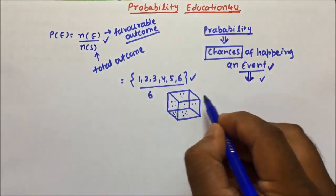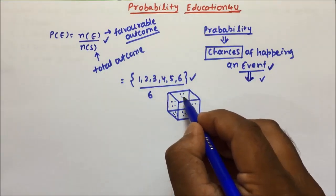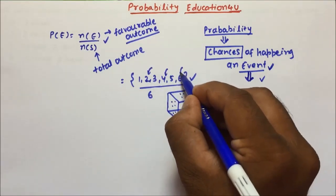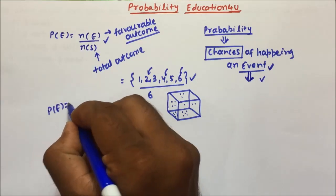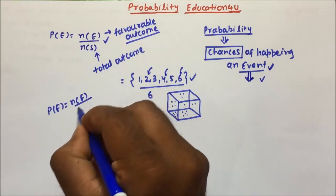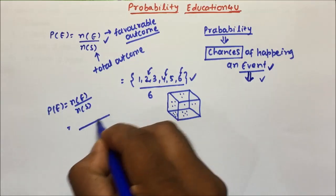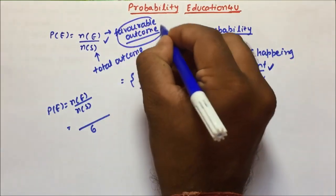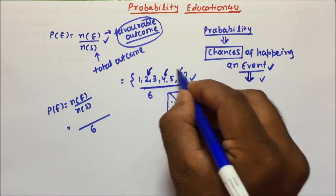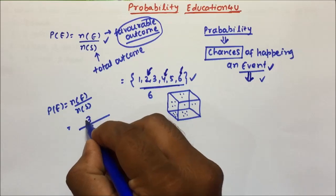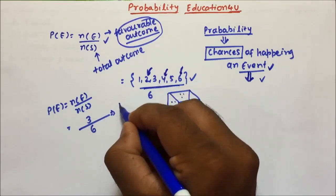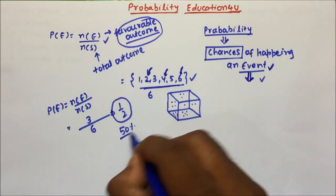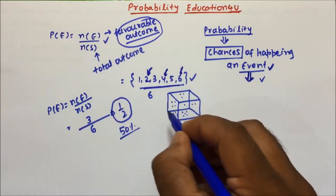Now, what are favourable outcomes? After throwing a dice, if I want an even number, that becomes my favourable outcome. So probability equals NE divided by NS. The total outcomes is 6, and the favourable outcomes for even numbers — 2, 4, 6 — gives us 3 out of 6. So the probability will become 1 by 2, that means 50 percent chances of getting an even number when throwing a dice.